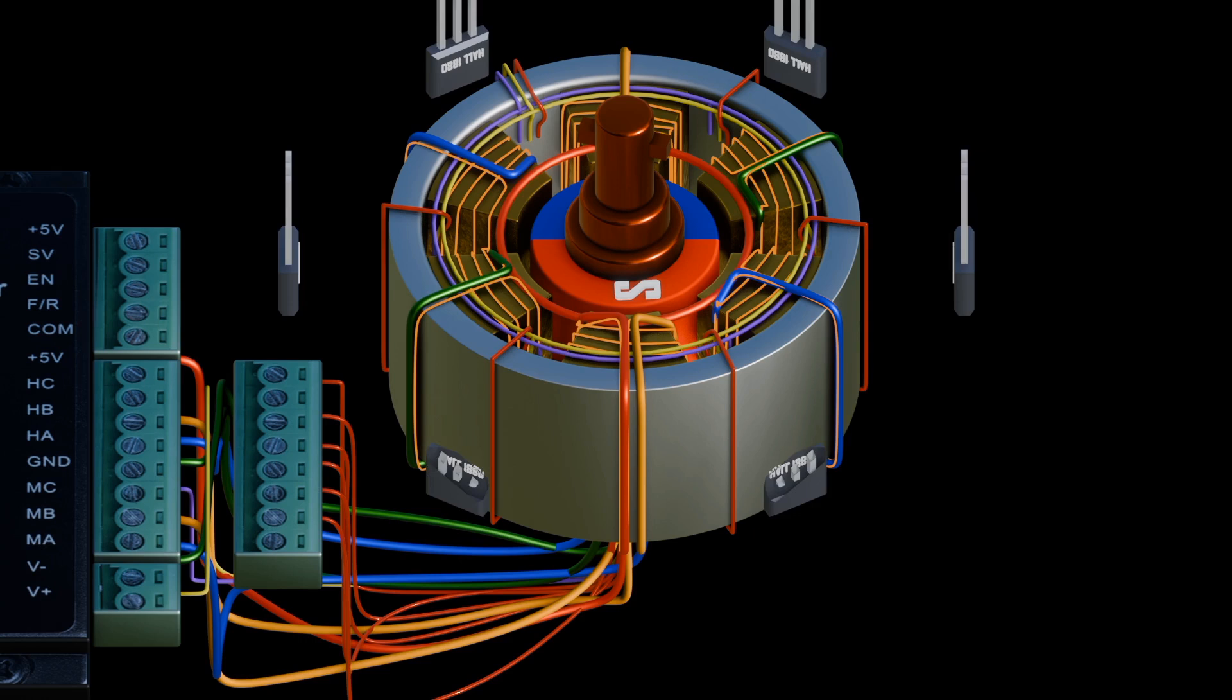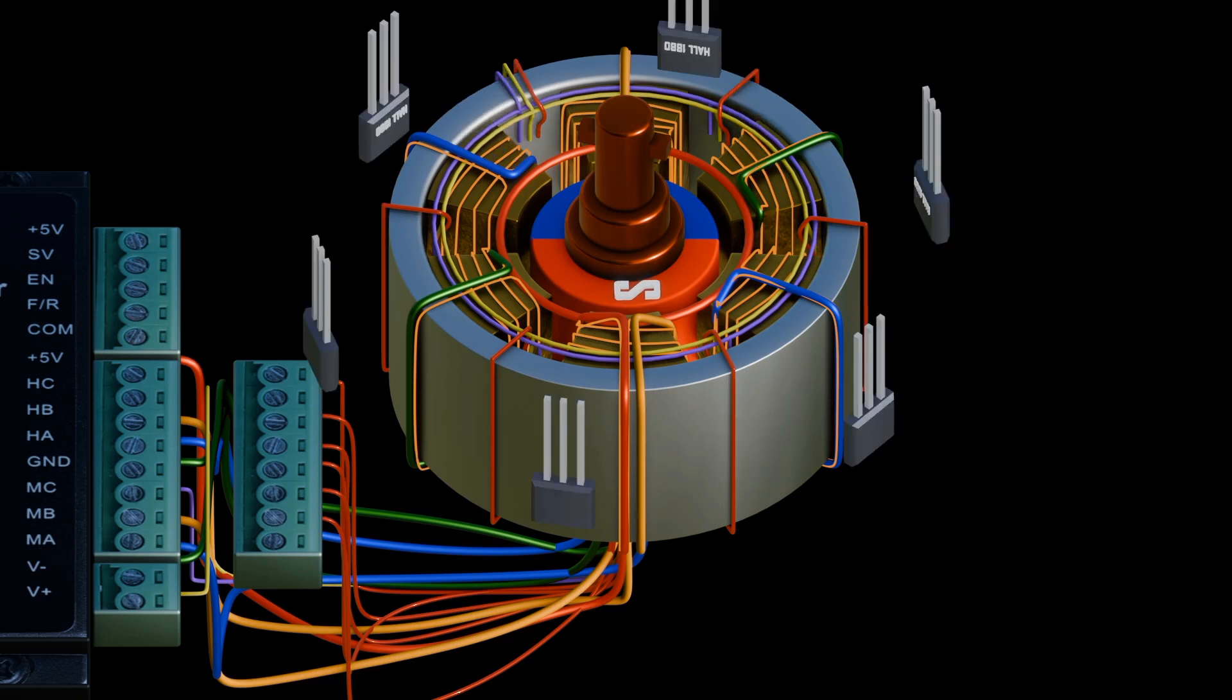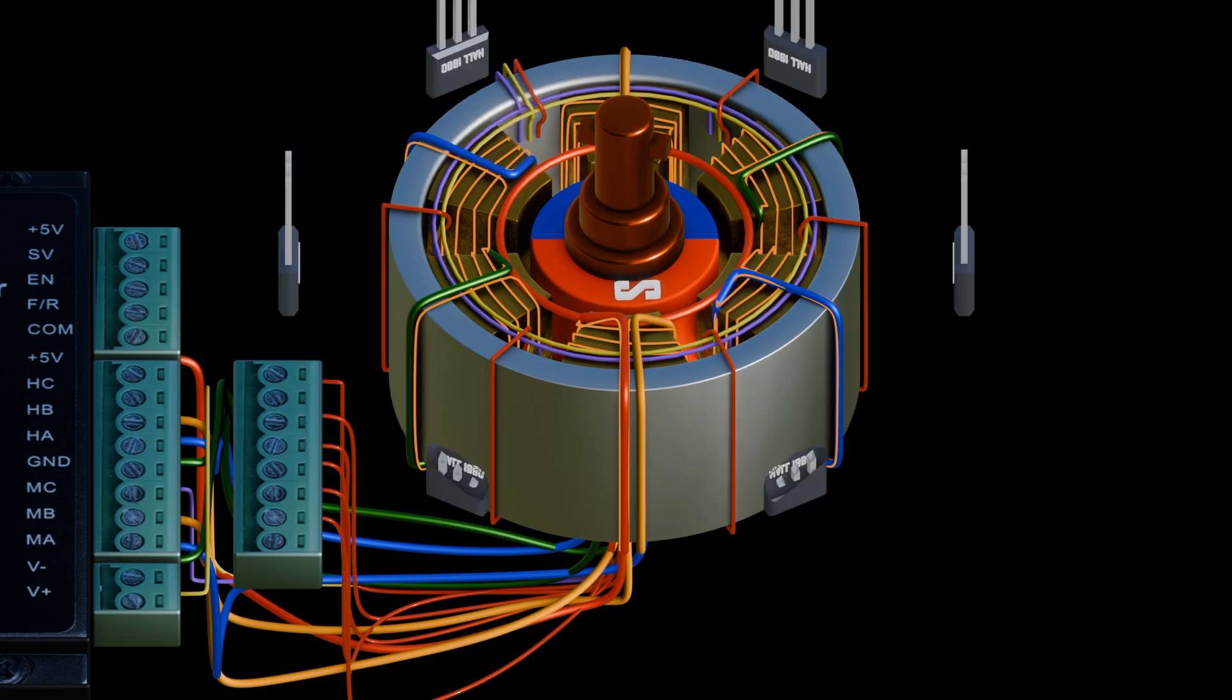Hall sensors or rotary encoders are commonly used to sense the position of the rotor and are positioned between the stator. The rotor magnet's position is being noticed by the sensors. Feedback from the sensor helps to determine when the switch is necessary.